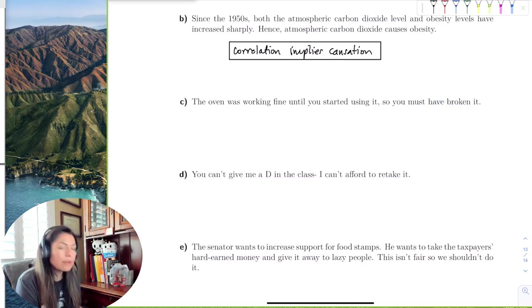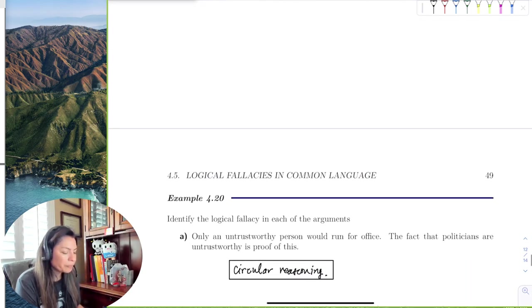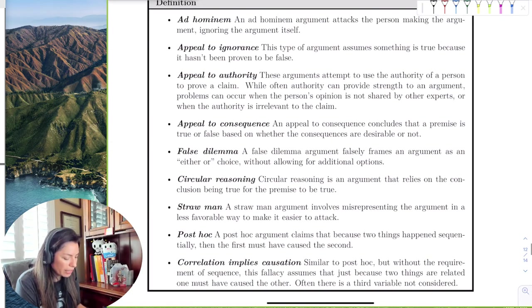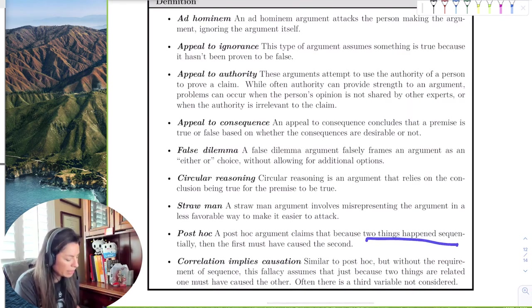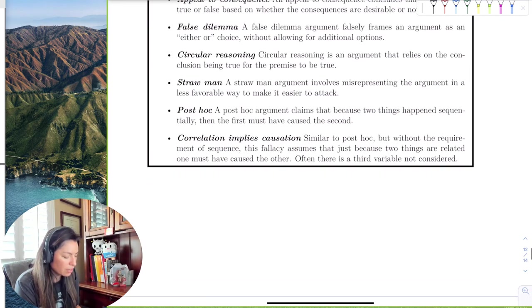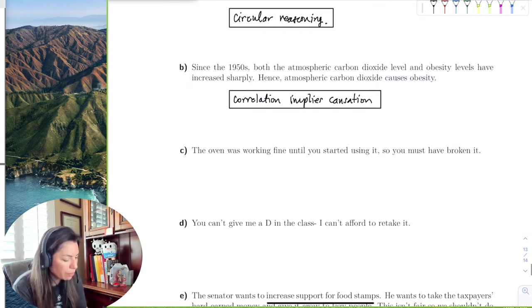So that one is that sequential one. If two things happen in sequence, then that must have been the cause, the cause, right? So if you go up here and look at these, here, post hoc is when two things happen in sequence, right? One must have caused the other. So this will be post hoc.